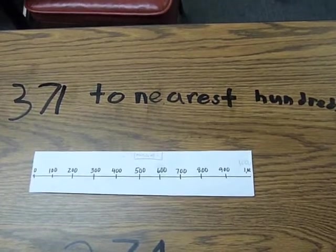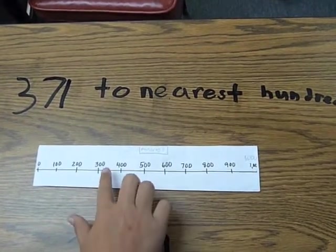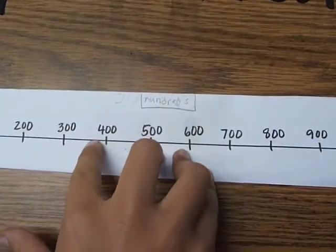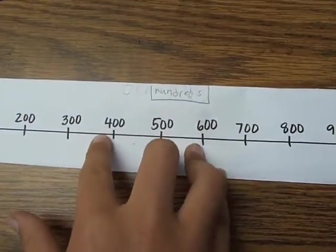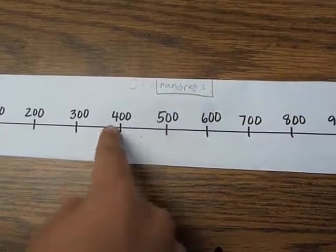Today we are going to round to the nearest 100 using the number 371. On the number line, 371 is right about here. So it's a lot closer to 400. So I'd do 400 if you ask me.